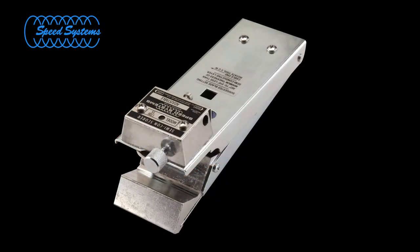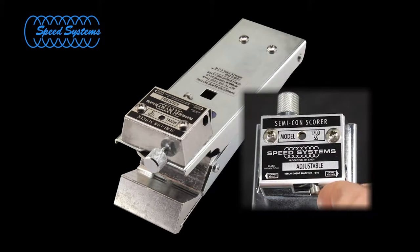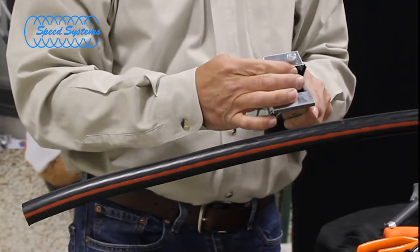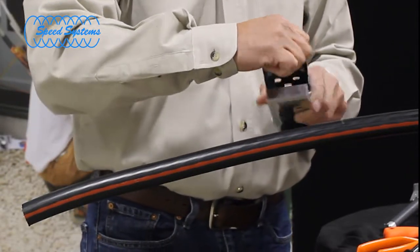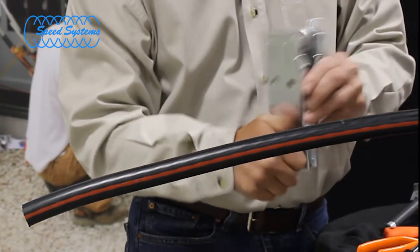Use the 1700SS to make a square cut in the outer jacket at the mark. Make sure the blade is in the square cut position. Open the jaws by turning the knob counterclockwise until the tool can be positioned on the cable. Set the blade depth so the blade does not touch any of the neutrals.